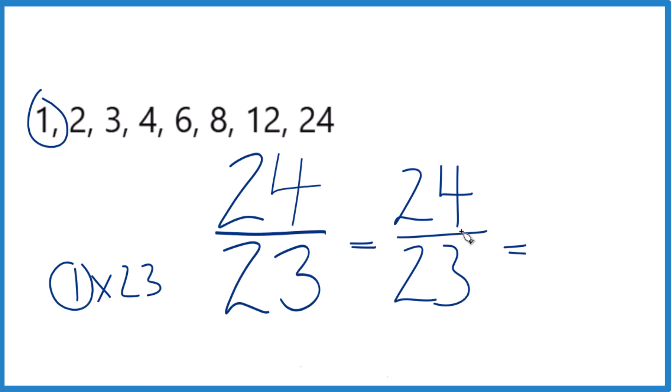23 goes into 24 one time. So 1 times 23 is 23. Then we just have 1 left over. Keep that 23 the same. And it turns out that 24 twenty-thirds equals 1 and 1 twenty-third.